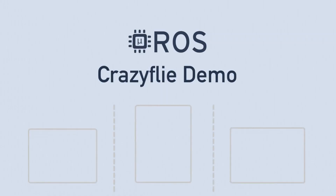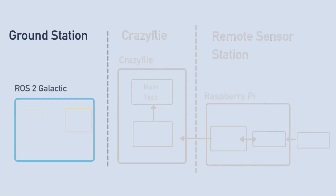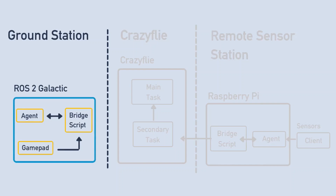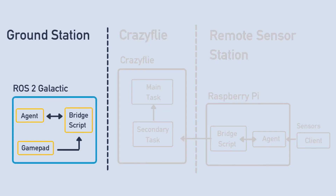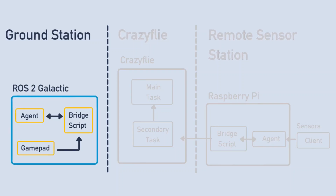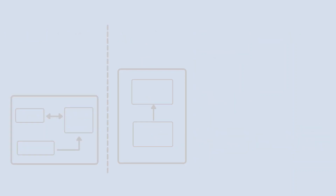In this demo there are three different MicroROS actors. First, the Ground Control Station: a ROS2 Galactic computer with a MicroROS agent instance and the Python bridge script in controller mode. It is in charge of representing the drone's published data.